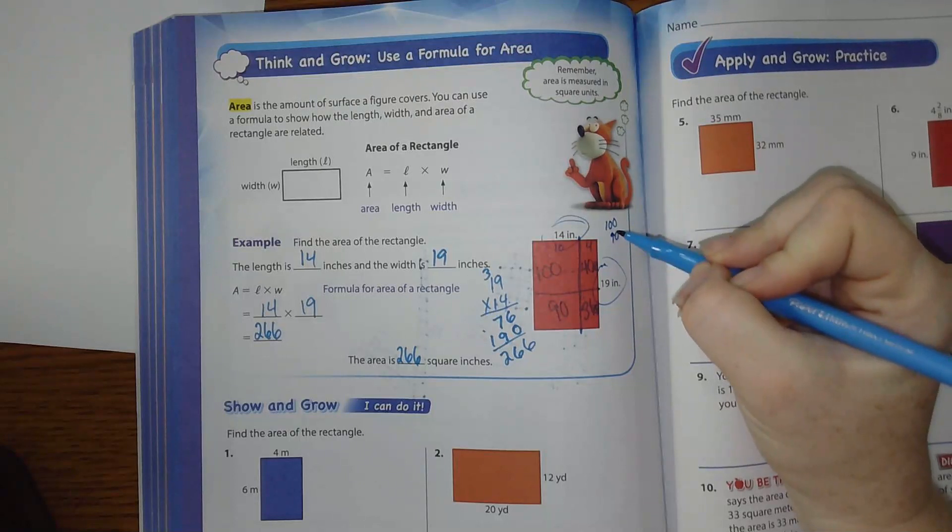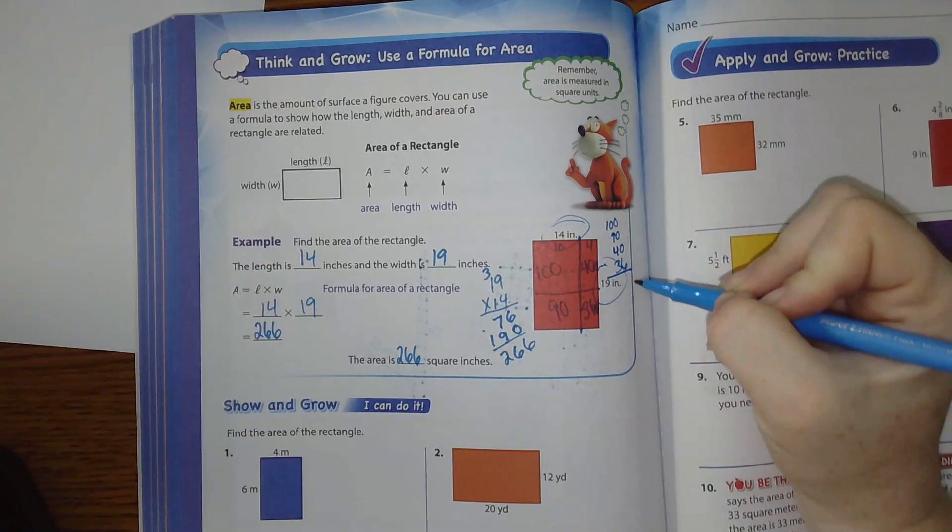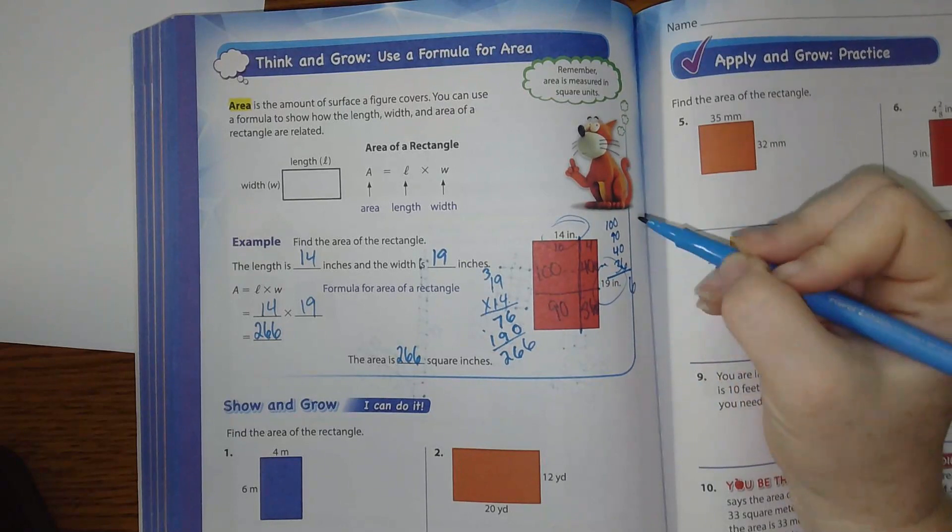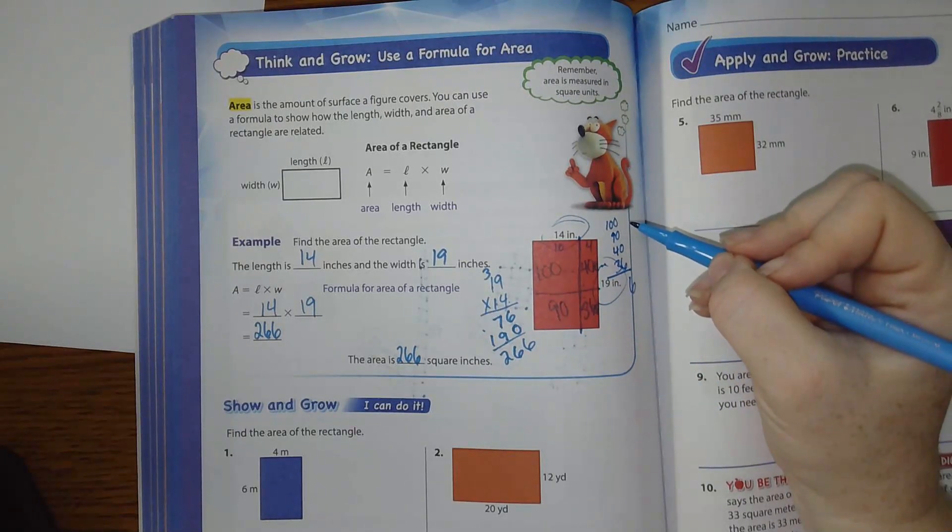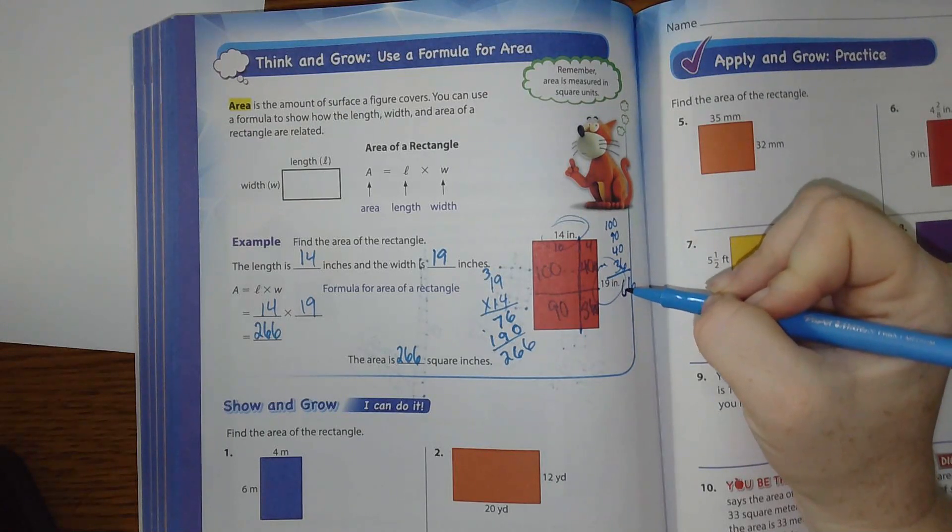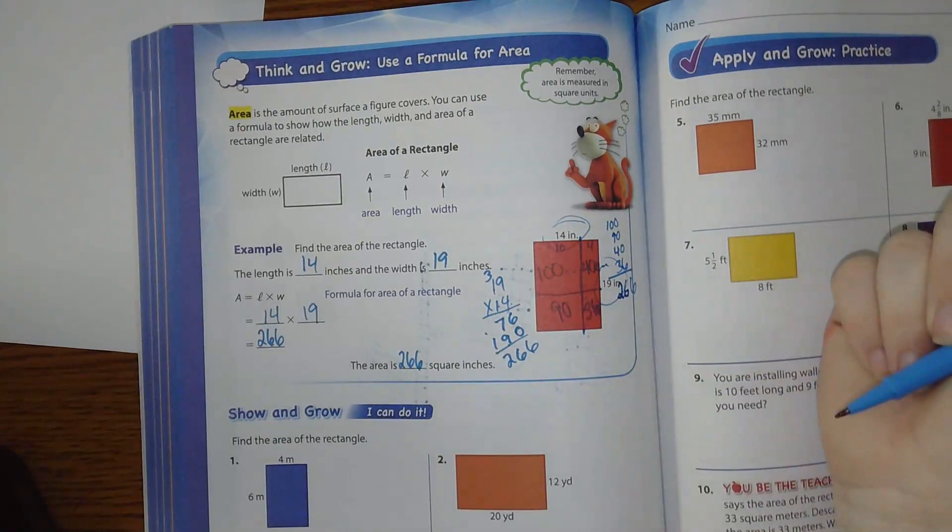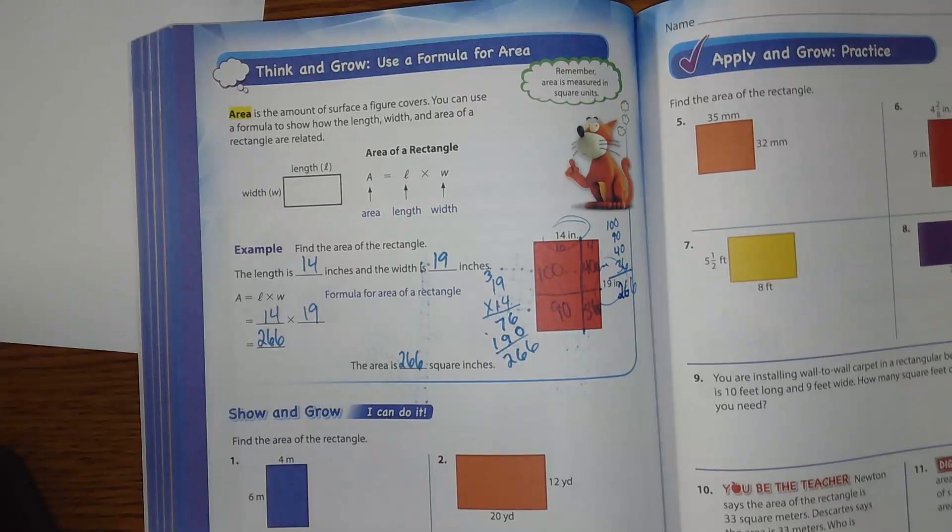And then adding all of those together. 100, 90, 40, and 36. When we add those together we get the same exact thing. You can do it either way. That's fine. Okay.